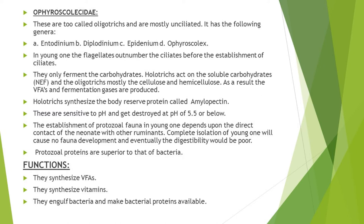Holotrichs, in addition to acting upon soluble carbohydrates, also synthesize a body reserve protein called amylopectin. The protozoa found in the rumen are very sensitive to pH and can be destroyed at a pH of 5.5 or below; therefore the pH of the rumen is kept near neutral to accommodate its microflora population. The synthesized protozoal protein is superior to bacterial protein. The establishment of protozoal fauna in the young animal depends upon direct contact of the neonate with other ruminants — complete isolation of the young animal from other ruminants causes poor development of the stomach due to lack of fauna establishment.